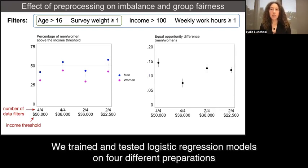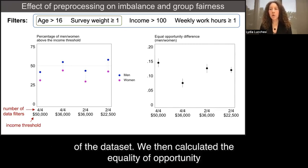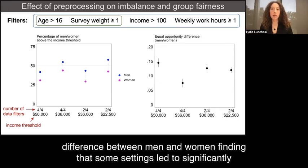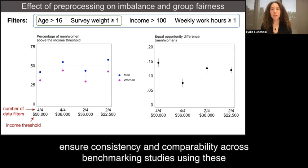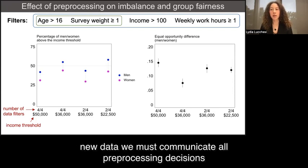We also find pre-processing settings can affect levels of group fairness. We trained and tested logistic regression models on four different preparations of the dataset. We then calculated the equality of opportunity difference between men and women, finding that some settings led to significantly different levels of fairness than others. Ultimately, to ensure consistency and comparability across benchmarking studies using these new data, we must communicate all pre-processing decisions.